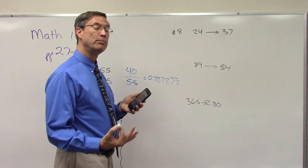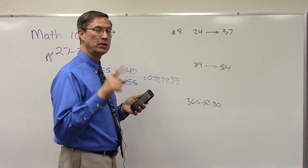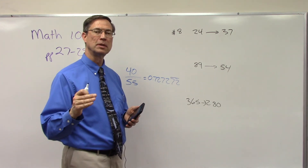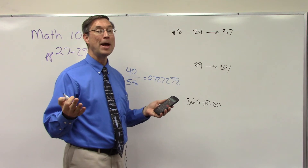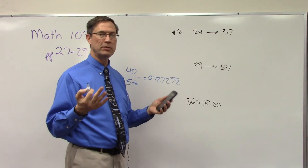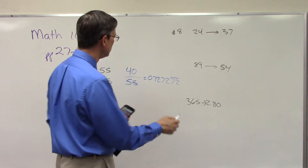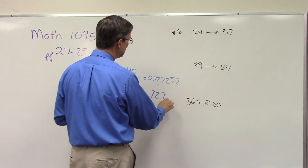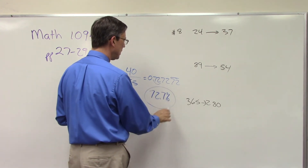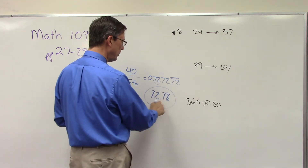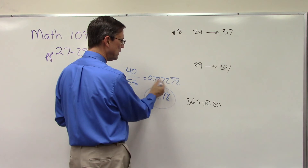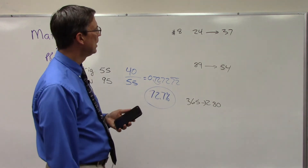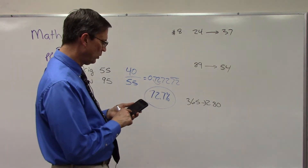I need to turn that into a percent, and the instructions tell us to round to one decimal place. Whenever we're turning a decimal into a percent, we move it twice — that's one of the cool rules about math. You always move it twice, never once, never three times, always twice. That turns it into 72.7%. We round down to the 7 because the next digit is a 2.